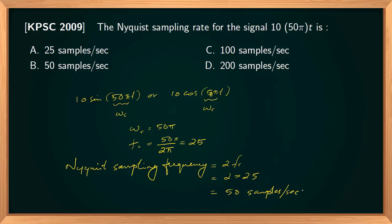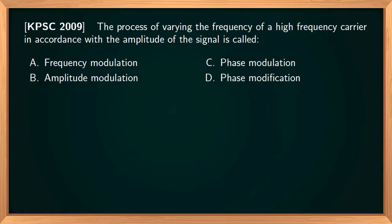The Nyquist sampling rate for this signal is 50 samples per second. This question is a direct definition of an FM system. In FM, the frequency of the high-frequency carrier is varied in accordance with the amplitude of the modulating signal. In phase modulation, the instantaneous phase angle of the carrier is varied in proportion with the message signal. In amplitude modulation, the carrier amplitude is made proportional to the instantaneous magnitude of the message signal.